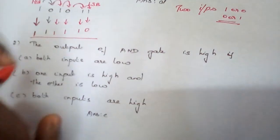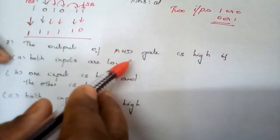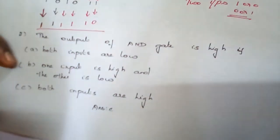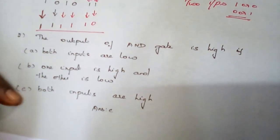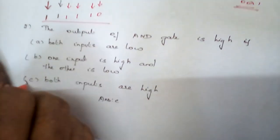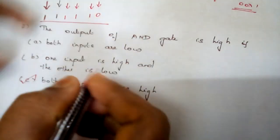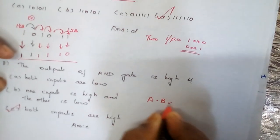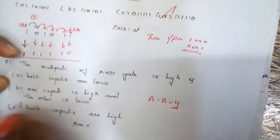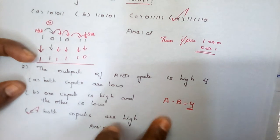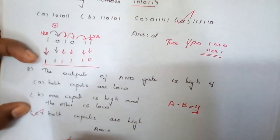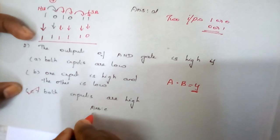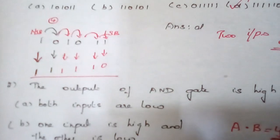Question number 5: The output of an AND gate is high if and only if both inputs are high. The function of the AND gate is A·B = Y. The answer is option C — both inputs are high. If you like this video, please like, share, and subscribe. Thank you.